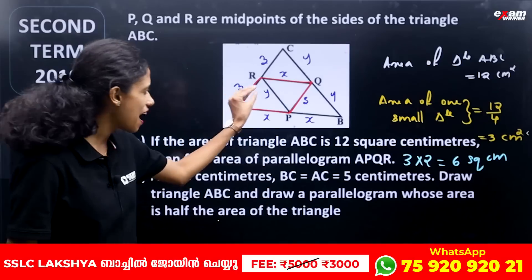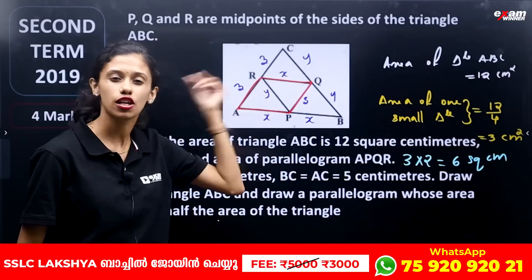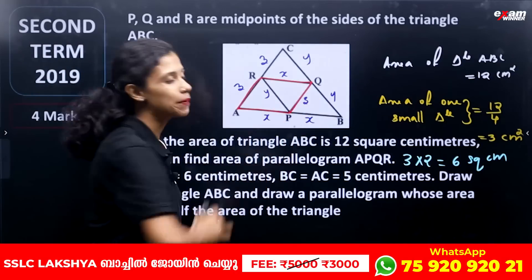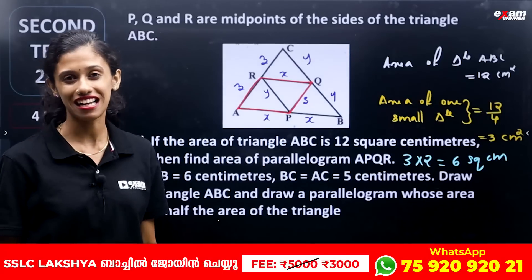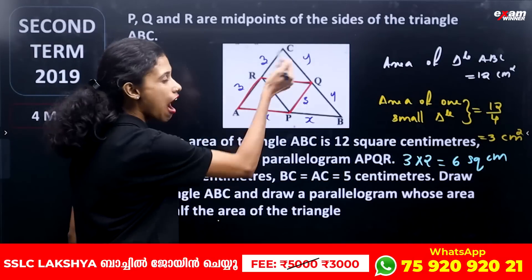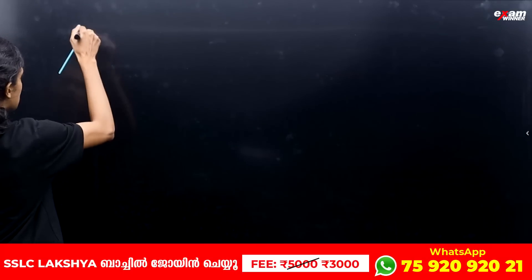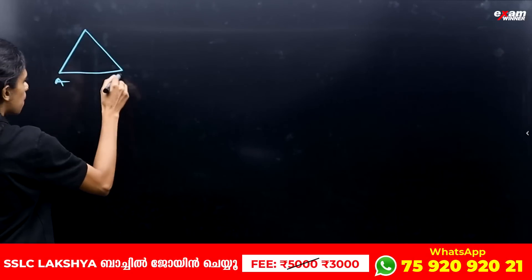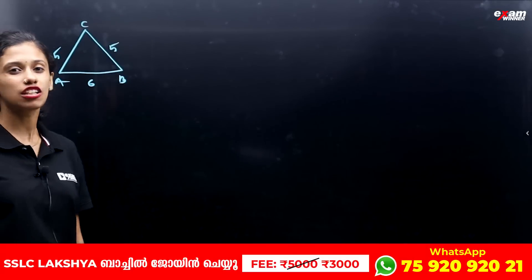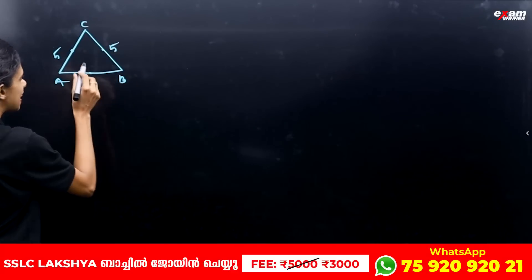A triangle with 3 cm² and total area equal to 12: 4 into 3 square centimeters equals 12 square centimeters. Now the parallelogram is equal to half of the triangle. So the parallelogram is half the triangle area, and we need to find the midpoints.